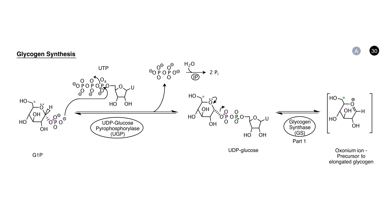Now let's take a look at the detailed pathway by which glucose 1-phosphate is converted to glycogen. At the left is the structure of glucose 1-phosphate. The first enzyme involved is UDP-glucose pyrophosphorylase, or UGP. The second substrate in this reaction is UTP, uridine triphosphate. UDP-glucose pyrophosphorylase catalyzes attack by the phosphate on the one carbon of glucose 1-phosphate on the alpha-phosphorus of UTP. The two products are pyrophosphate and UDP-glucose. The reaction is made thermodynamically irreversible by hydrolysis of pyrophosphate by inorganic pyrophosphatase into two molecules of inorganic phosphate.